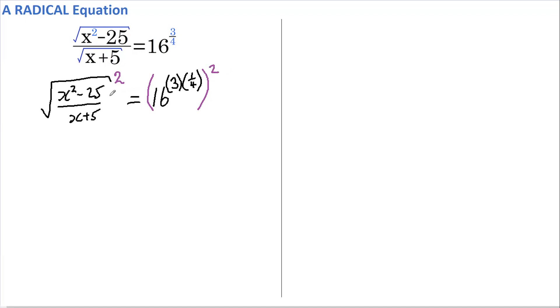On the left-hand side, the square root sign and the square cancel each other out. So we're just left with x squared minus 25 divided by x plus 5.